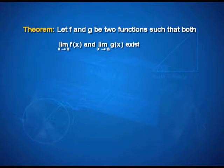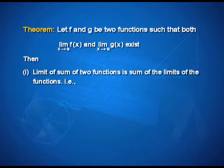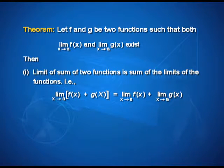Let us see theorem number 1. Let f and g be two functions such that both limit f(x) as x tends to a and limit g(x) as x tends to a exist. Then first: the limit of the sum of two functions is the sum of the limits of the functions, that is, limit of f(x) plus g(x) as x tends to a is equal to limit of f(x) as x tends to a plus limit of g(x) as x tends to a.